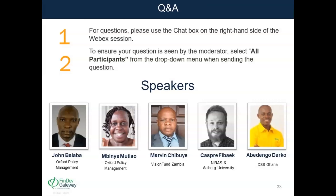A question from a participant: can we have a very efficient tool that can help link people from remote areas to the microfinance arena? Essentially, once you are able to capture this data, the bank or MFI can refine their products and delivery channels, including how they deploy their footprint and agents, and how to effectively serve them. These tools will give you evidence that you can use to work backwards and refine your products and delivery channels. Yes, it is possible.